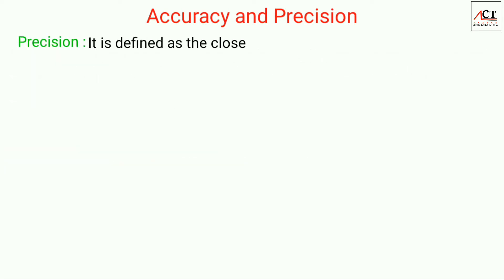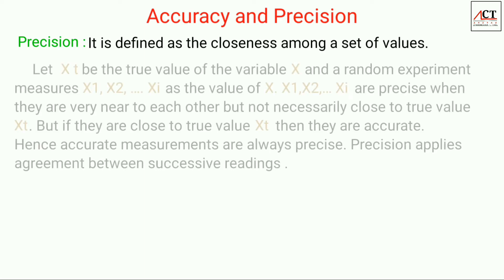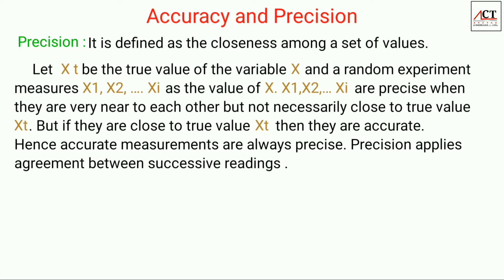Precision is defined as the closeness among a set of values. Let Xt be the true value of the variable X and a random experiment measures X1, X2 till Xi as the values of X. Then X1, X2 till Xi are precise when they are very near to each other but not necessarily close to the true value. But if they are close to the true value, then they are accurate. Hence, accurate measurements are always precise. Precision applies agreement between successive readings.